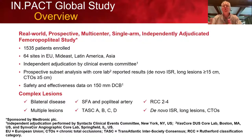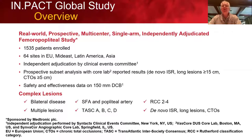The Impact Global Study is a real-world, prospective, multi-center, single-arm, independently adjudicated femoropopliteal study. It originally enrolled 1,535 patients at 64 sites across the world, excluding the United States. There was independent adjudication by a Clinical Events Committee, and this was a prospective subset analysis with core lab-reported results for de novo and stent restenosis, long lesions greater than 15 centimeters, and CTOs greater than 5 centimeters. Safety and effectiveness data were also examined on the 150-millimeter DCB subset.